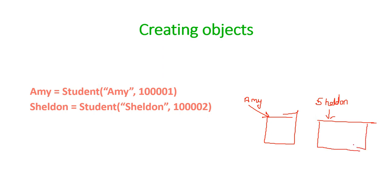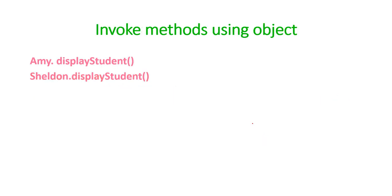Again, we will have Sheldon, and this would be referring to another object having name as Sheldon and roll number as 1002. We have also seen in the previous slide, like if we want to invoke these methods, we can invoke it using the object Amy dot display student. It will print all the information of Amy. For Sheldon, Sheldon dot display student will display all the information about Sheldon. This is how we invoke methods using object.